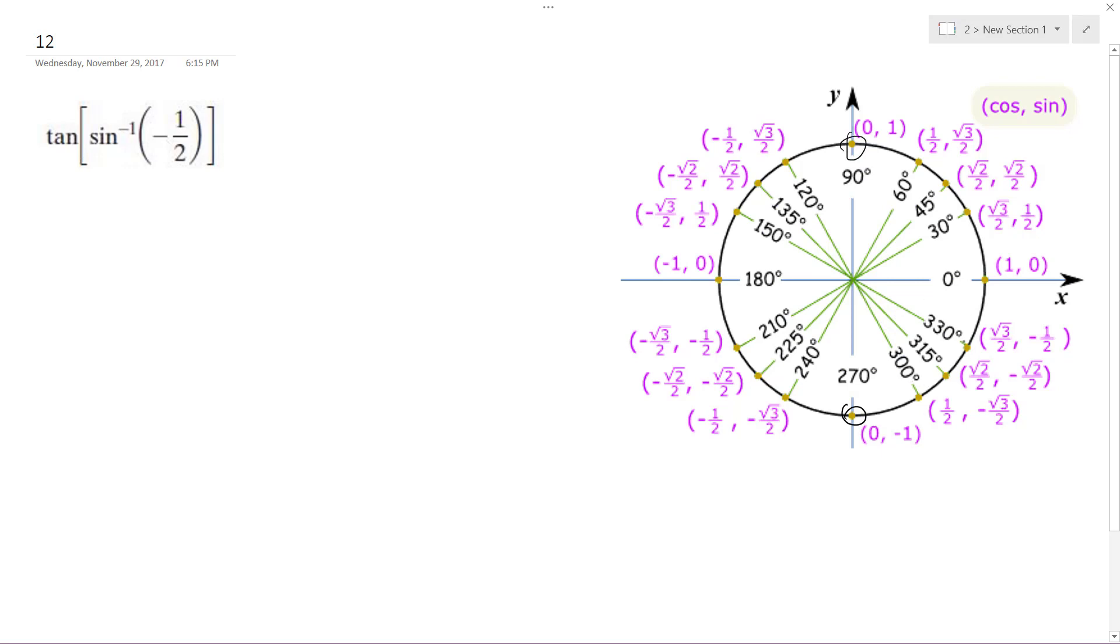Negative 1 half, so it's actually down here. That's convenient. So negative pi over 6. So negative pi over 6 for tangent. So down here,